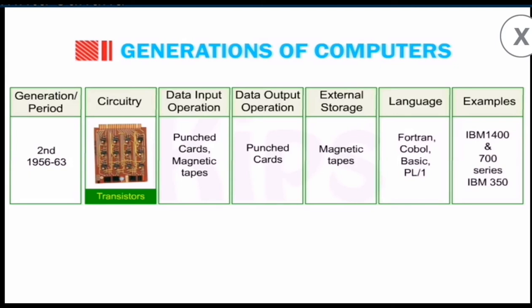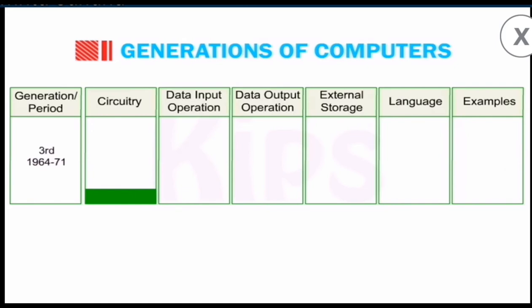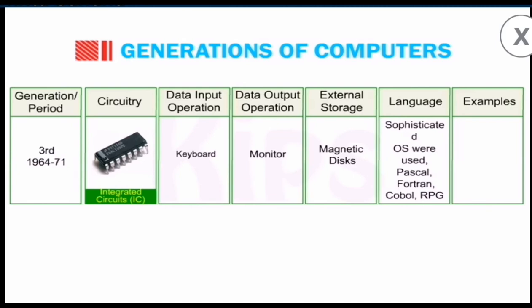Let's move to the third generation of computers, which started from 1964 to 1971. They used integrated circuits, which we call ICs. Data was input with the help of keyboards. Output reflected on monitors. They used magnetic disks in place of magnetic tapes. They started using operating systems like PASCAL, FORTRAN, and COBOL. Examples were IBM System 360 and Apple I.